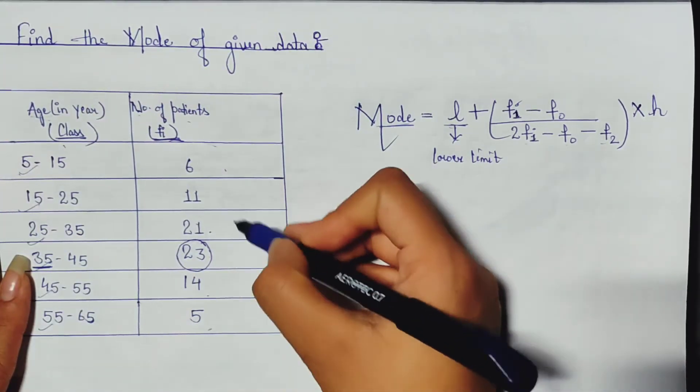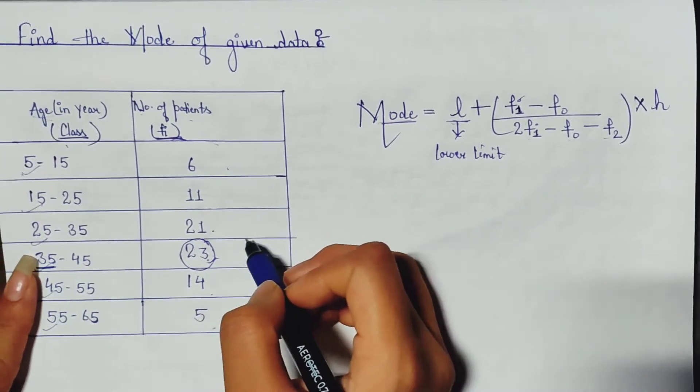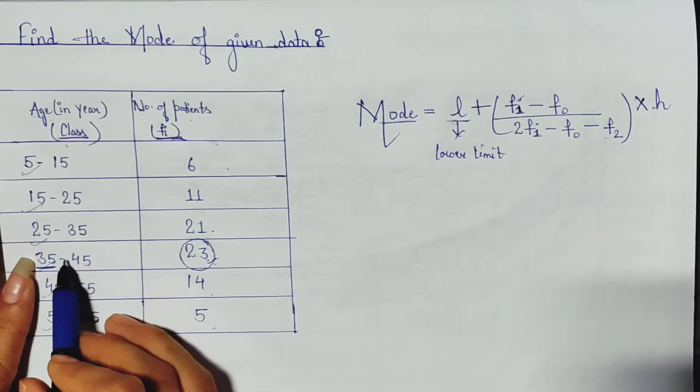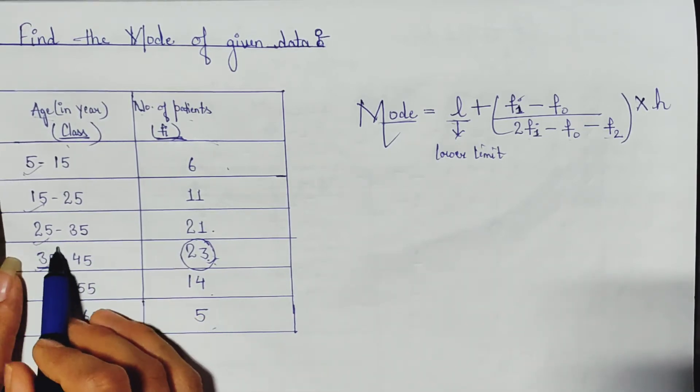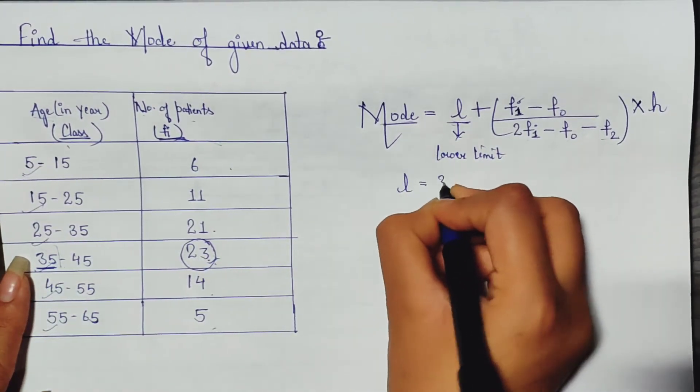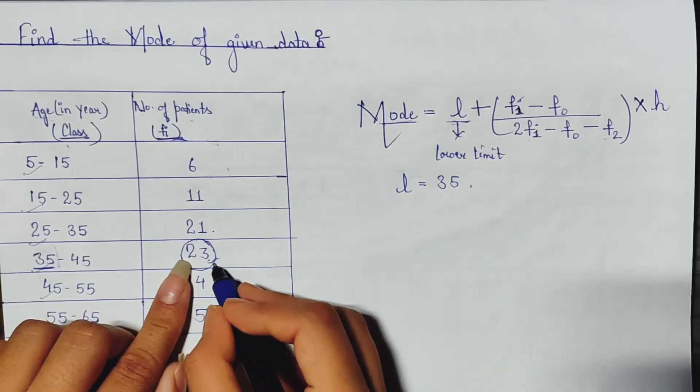What is the lower limit in the same row? First of all we need to find the highest frequency, that is here 23. Now in the same row we need to check the lower limit, here 35.